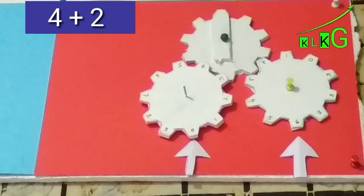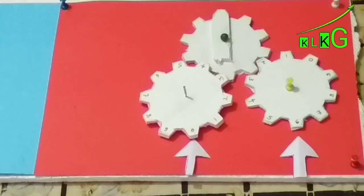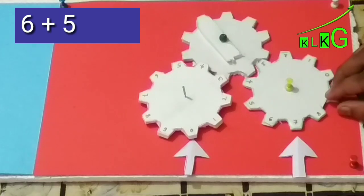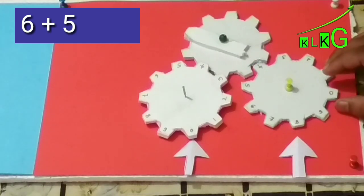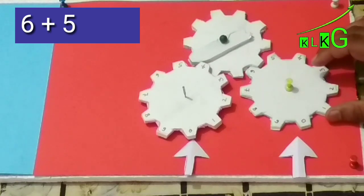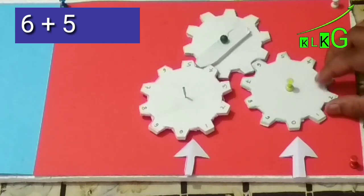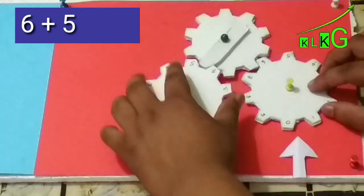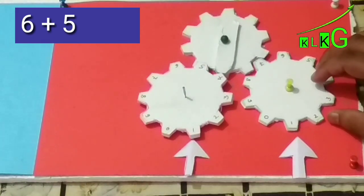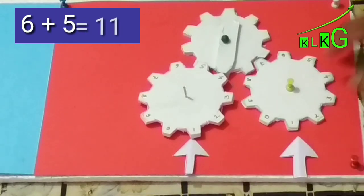Now let us add six plus five. So for six is already there, now five times we have to rotate: one, two, three, four, and five. See yes, so the left side circle will also rotate itself, so one and one, so eleven we get the answer. Like that we can get the addition of any number.